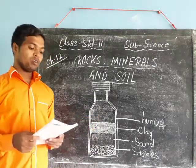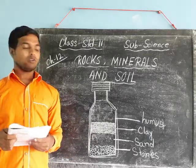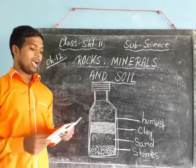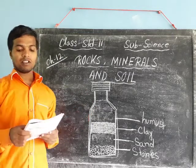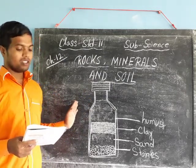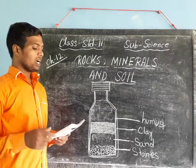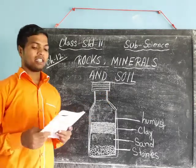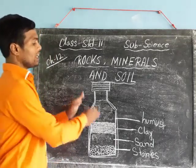Put some garden soil in a bottle. Fill the bottle with water. Put the lid on and shake the bottle well. Let it still for some time and then observe the different layers that form.